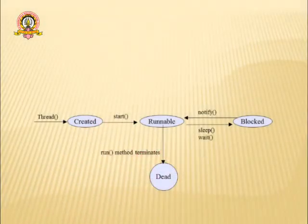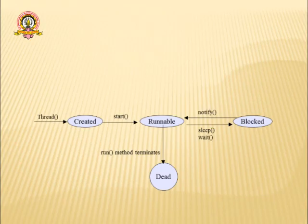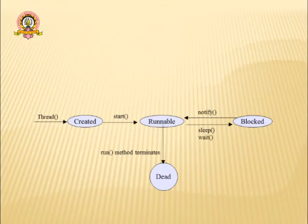These are the different states in which a thread executes. From the block diagram, you can see that the thread is created, it goes to the runnable state, and it may also go to the blocked state. While executing, it may go to the dead state, or it may go to the blocked state. From the blocked state, it must come back to the runnable state before it can start execution again. From the blocked state, you cannot directly make the thread go to the dead state. This is how the thread moves between different states and how threads execute.